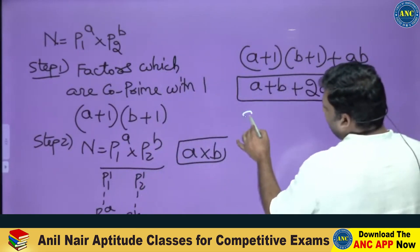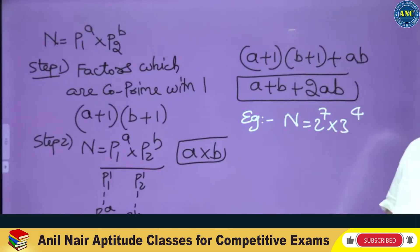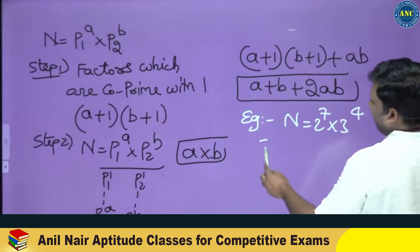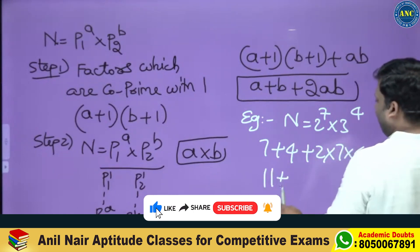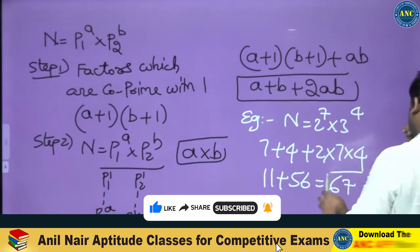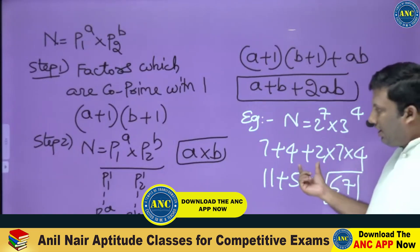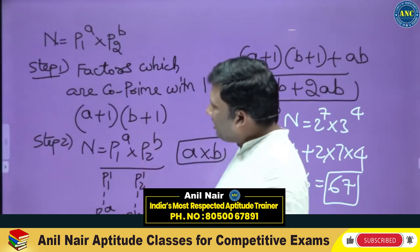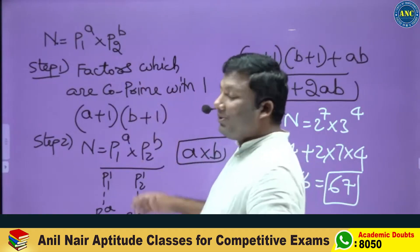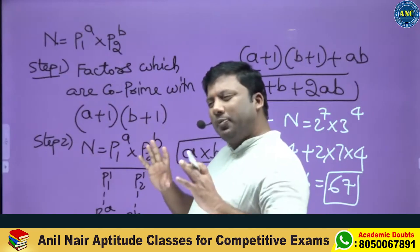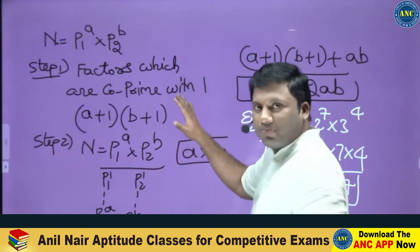So the formula is A + B + 2AB. For example, if N = 2 power 7 into 3 power 4, the answer is A + B + 2AB = 7 + 4 + 2(7)(4) = 11 + 56 = 67. I hope the idea is clear. This concept can also be used to find out LCM using the HCF approach, since any two numbers can be written as HK1 and HK2.